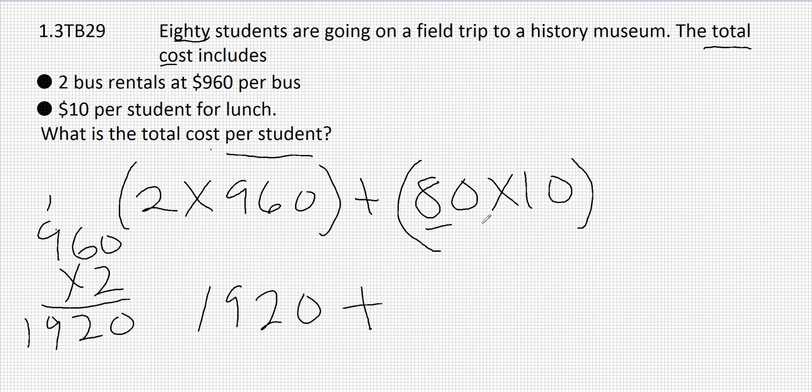Now this should be a mental math problem. 10 times 80 is 800. And now if we add those two together, we should get the total cost.